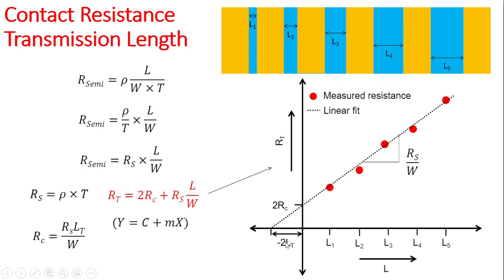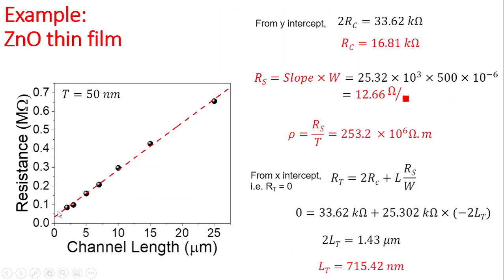The region at which the line cuts the X-axis will be twice the transmission length. Using this and the slope of the fit line, you'll be able to obtain the parameters Rc, LT, and also ρc. Let's see an example where I have a zinc oxide thin film of thickness 50 nanometers.